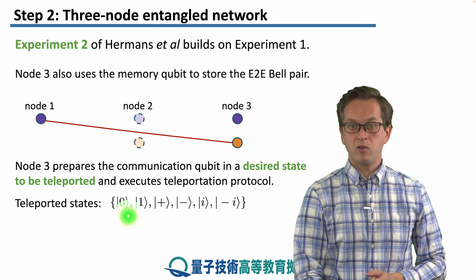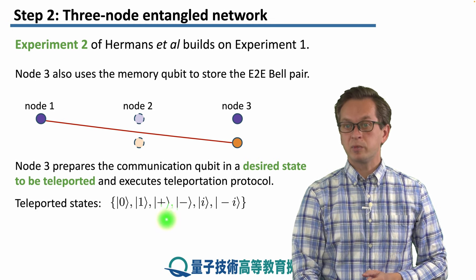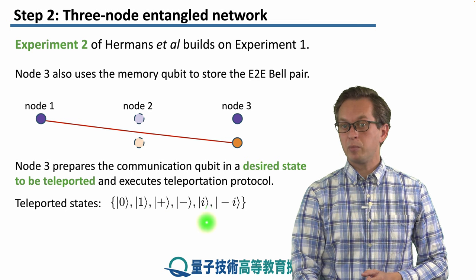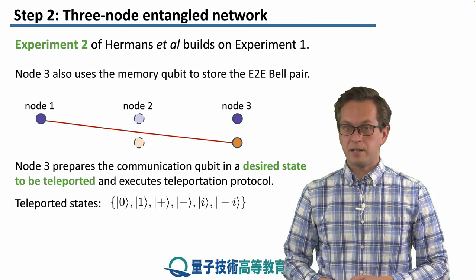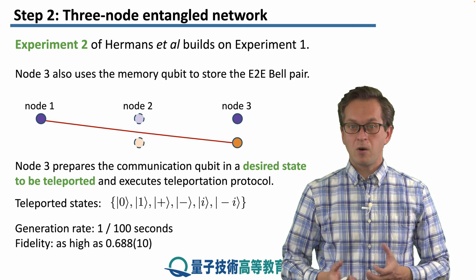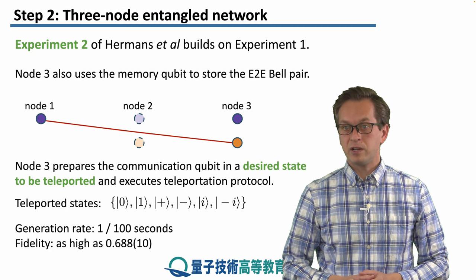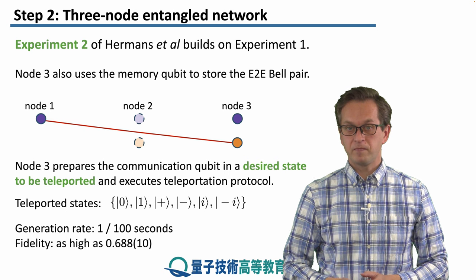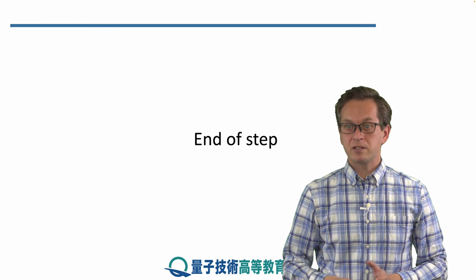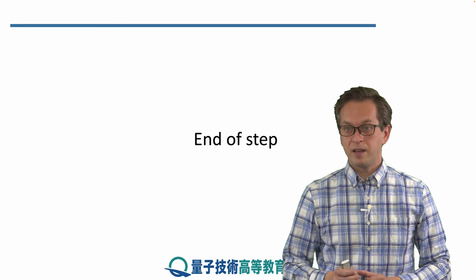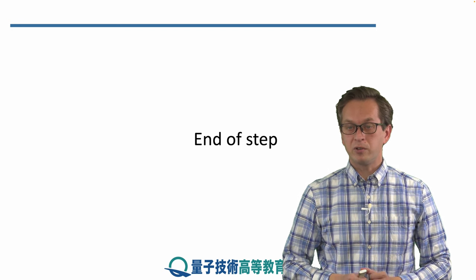The various states that were teleported were all the plus-one and minus-one eigenstates of the Pauli matrices: the states zero and one, and equal superpositions of zero and one in the form of the plus state, minus state, plus-i state, and minus-i state. All of these were teleported and the average fidelity was as high as 0.688, with a generation rate of approximately one in 100 seconds. That covers the experiments using NV centers in diamond. In the next step, we're going to look at purely photonic experiments.